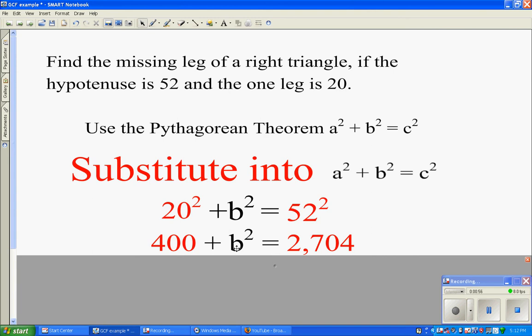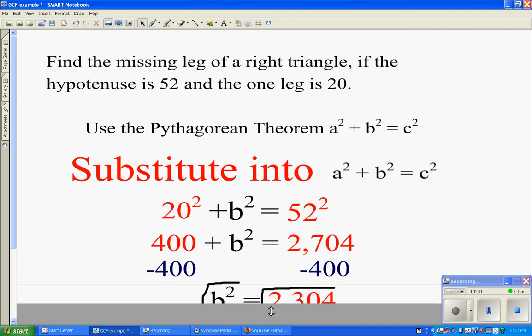To get b squared by itself, I subtract 400 from both sides. That leaves us b squared equals 2,304.